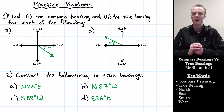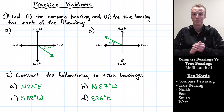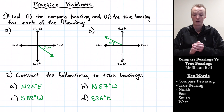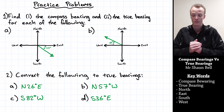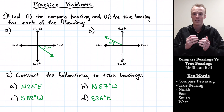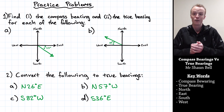Now I'd like you to have a go. There are a couple of problems asking you to record the compass bearing and the true bearing for what's given in the diagram. For question two, there are four compass bearings given, and I'd like you to convert all four to true bearings.